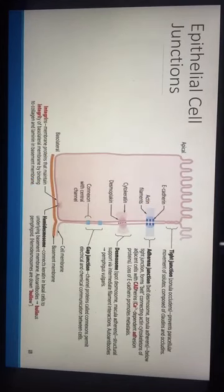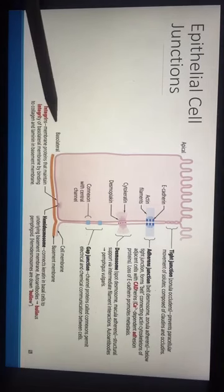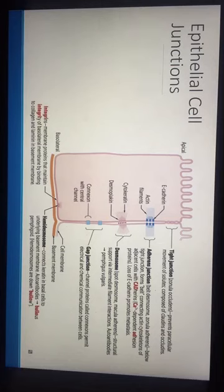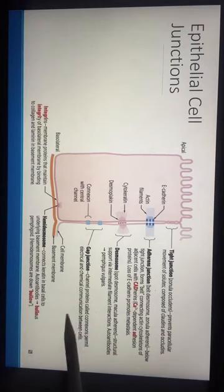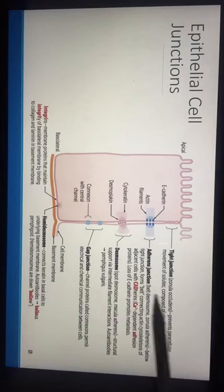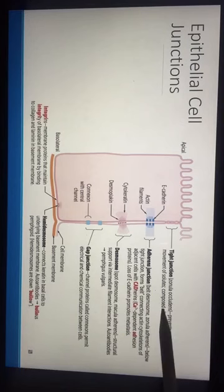Regarding epithelial cell junctions, there are many types. For example, integrins are found in the basolateral domain. There are also hemidesmosomes, gap junctions, desmosomes, adherens junctions, and tight junctions.